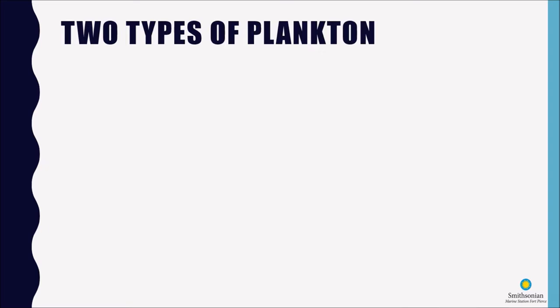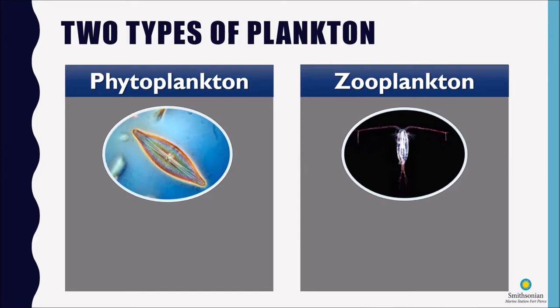So when we're talking about plankton we're actually talking about two different types of plankton. Phytoplankton is single-celled and it is more plant-like. An easy way to remember the word phytoplankton is that phyto means plant.